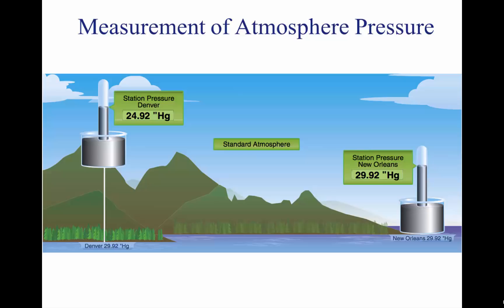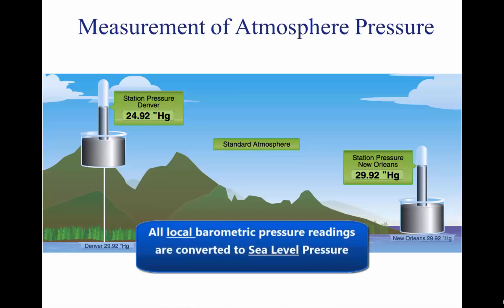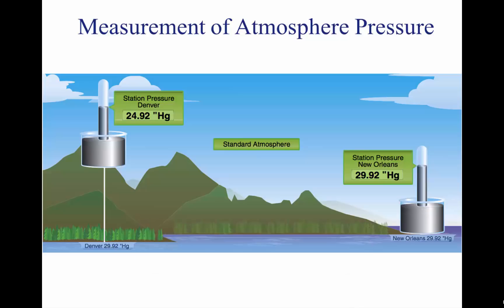Since weather stations are located around the globe, all local barometric pressure readings are converted to a sea level pressure to provide a standard for records and reports. To achieve this, each station converts its barometric pressure by adding approximately 1 inch of mercury for every 1,000 feet of elevation.